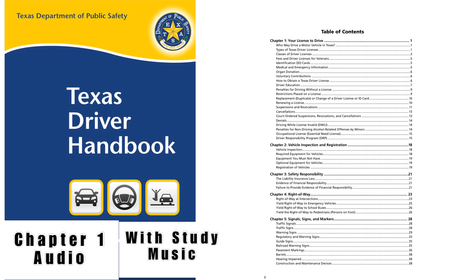A person applying for a hardship license must: 1. Be at least 15 years of age but not more than 18. 2. Complete and pass a driver education course, which includes both the classroom and behind-the-wheel phase, vision, knowledge, and driving exams. 3. Meet all other requirements for a first-time driver license. For more information, please visit our website at www.dps.texas.gov/driverlicense/teendriver.htm.